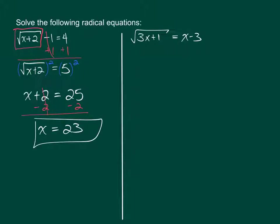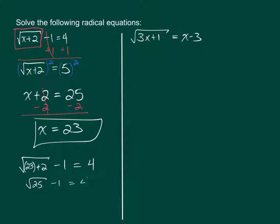You can just quickly double-check by substituting your answer back into the original equation for X. So substitute 23: the square root of 23 plus 2, minus 1. Does that equal 4? Well, 23 plus 2 is the square root of 25, minus 1 equals 4. The square root of 25 is 5, minus 1 equals 4. Check — that is true. This is a good answer.